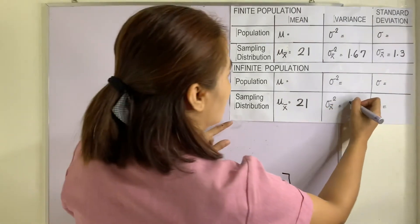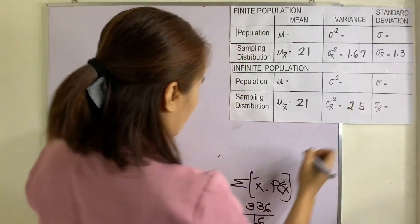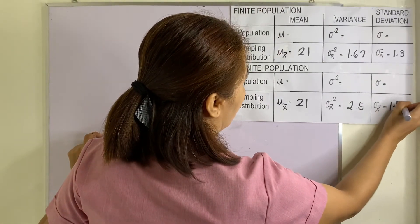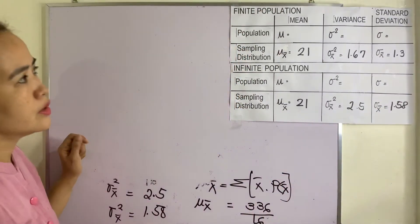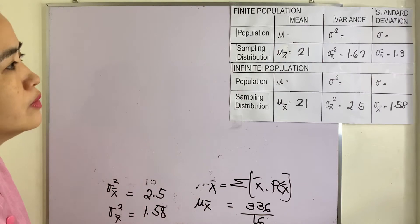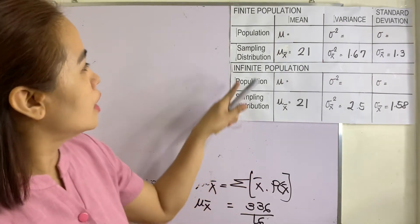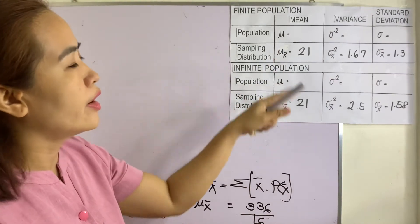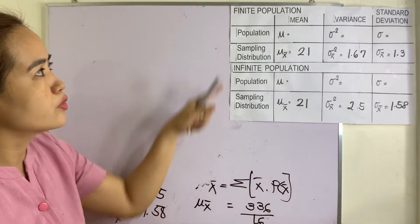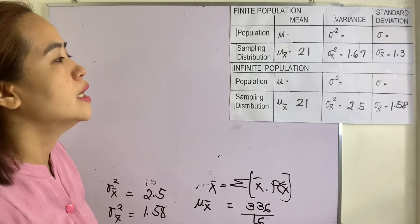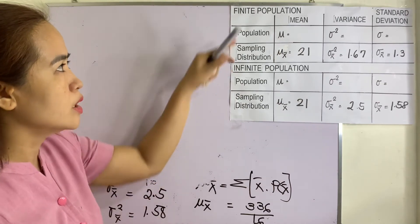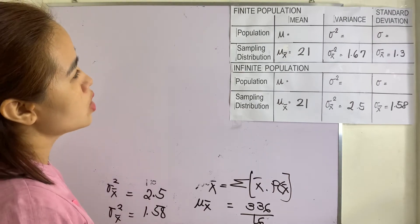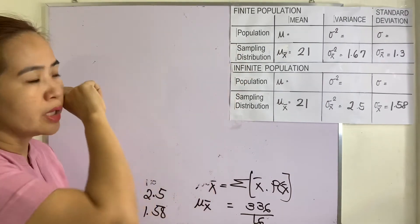We can now place the mean, variance, and standard deviation for the infinite population: mean is 21, variance is 2.5, and standard deviation is 1.58. Now let us compare this with the population mean, variance, and standard deviation — we already have both finite and infinite population results. Finite is without replacement and infinite is with replacement.